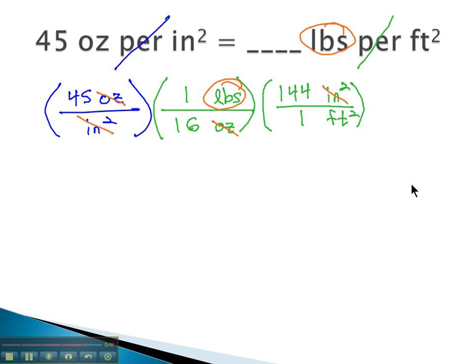Now the square inches divide out, and we're left with the square feet that we want. We're ready to multiply across. In the numerator, 45 times 144 is 6,480 pounds. Over in the denominator, 16 times 1 square foot is 16 square feet.